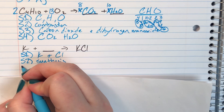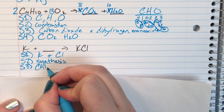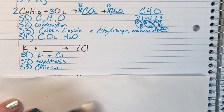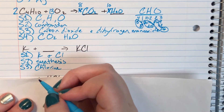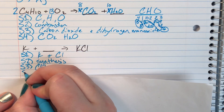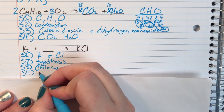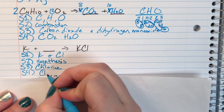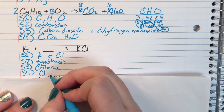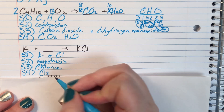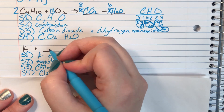Step three: since this is a synthesis reaction, I need chlorine by itself. Step four — figuring out what chlorine looks like: chlorine is part of the diatomic elements, so if it's by itself and not bonded with anything, it takes the form of Cl2.